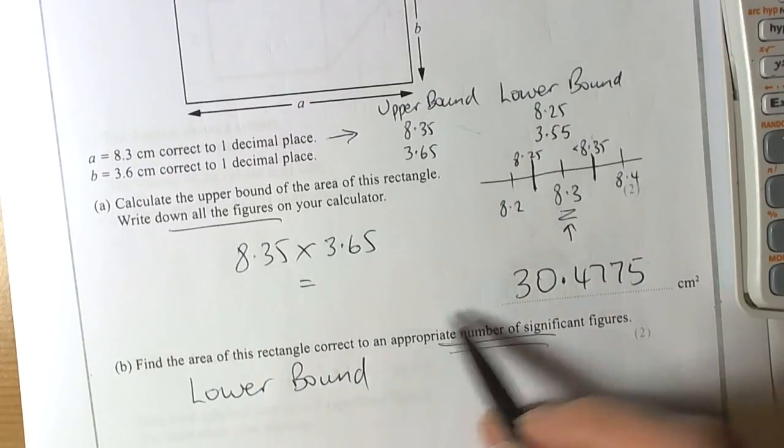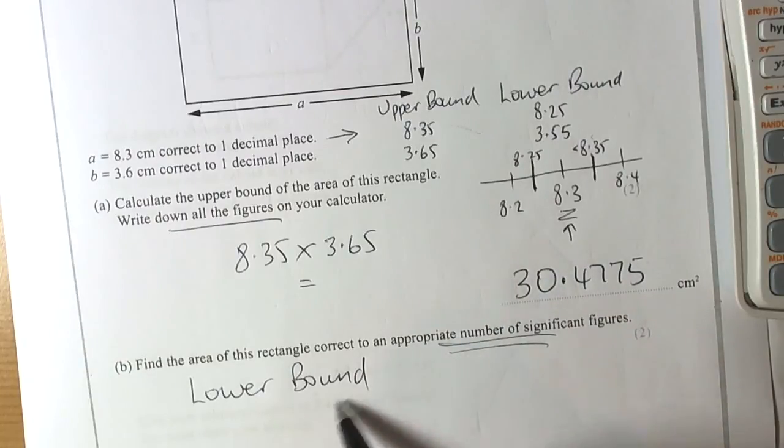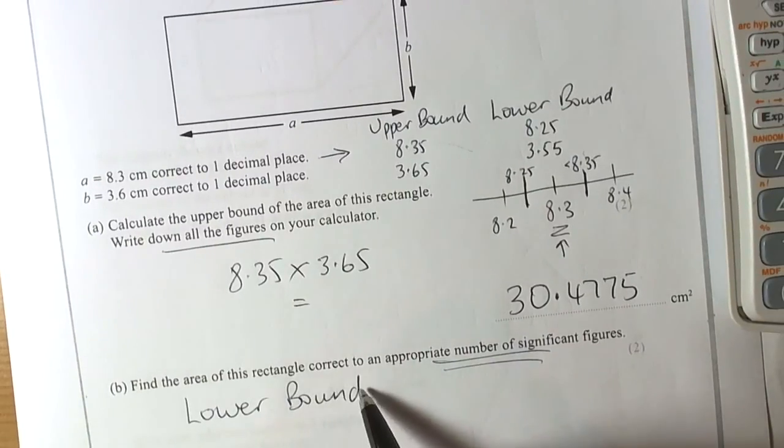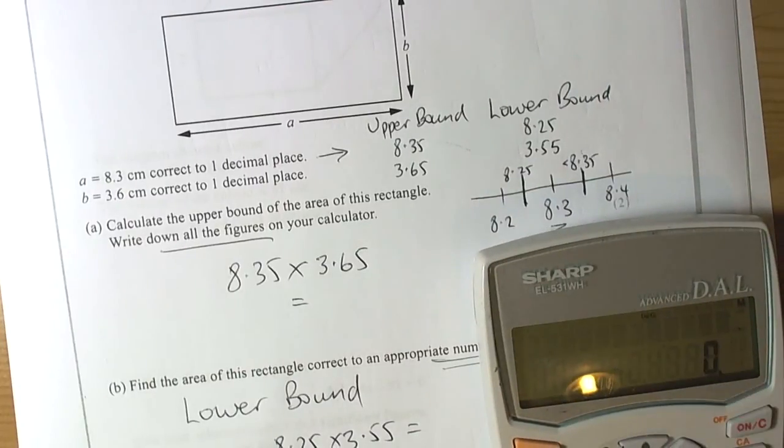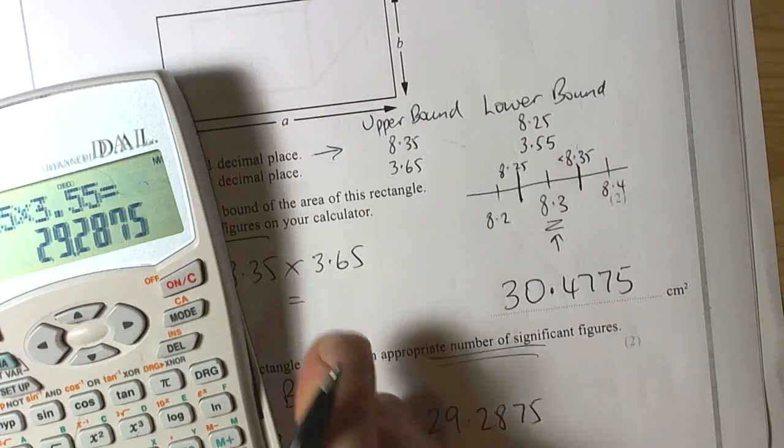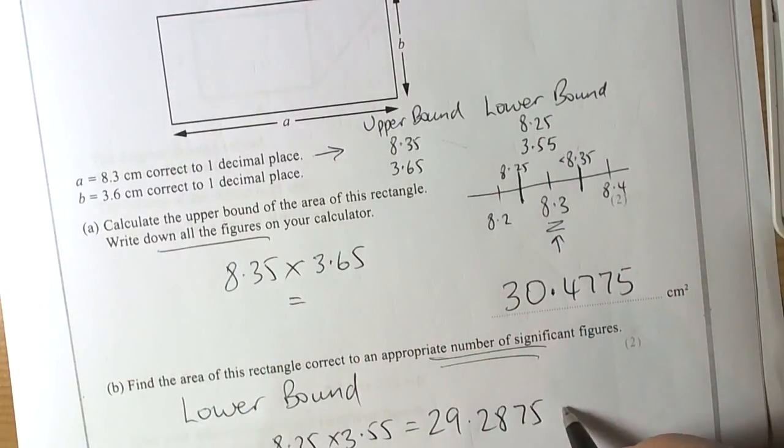Because then you can look at both of these bounds and say which value would be the best one to use for the area of the actual rectangle. So the lower bound must be the lowest values multiplied together. The lowest value of A possible, the lowest value of B possible. So the lower bound is going to be 8.25 times 3.55. So 8.25 times 3.55 equals... So we've got 29.2875. Square centimetres of course.